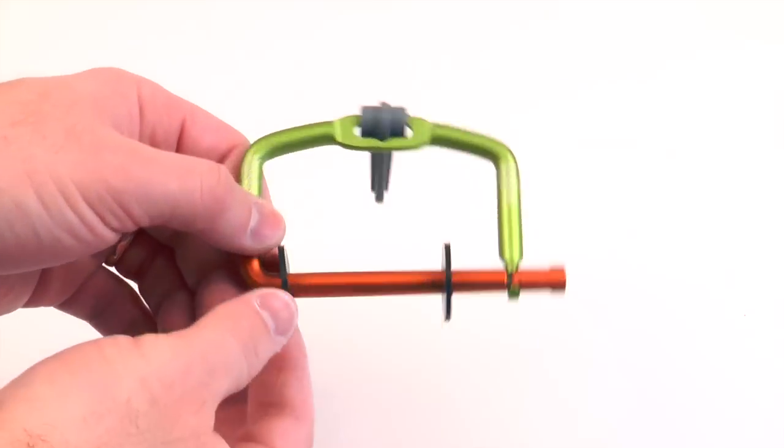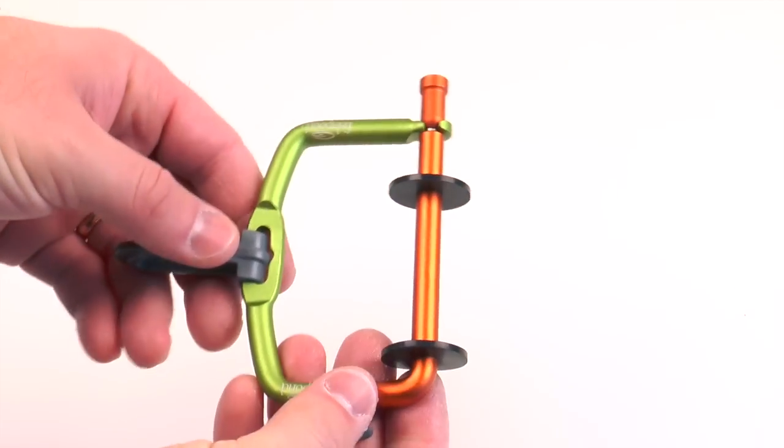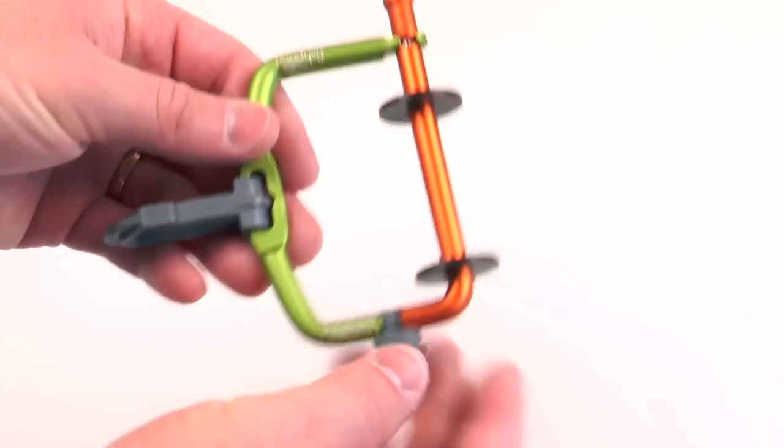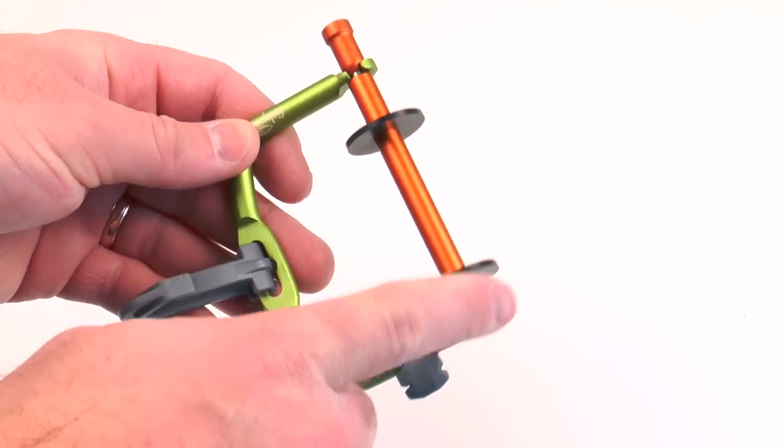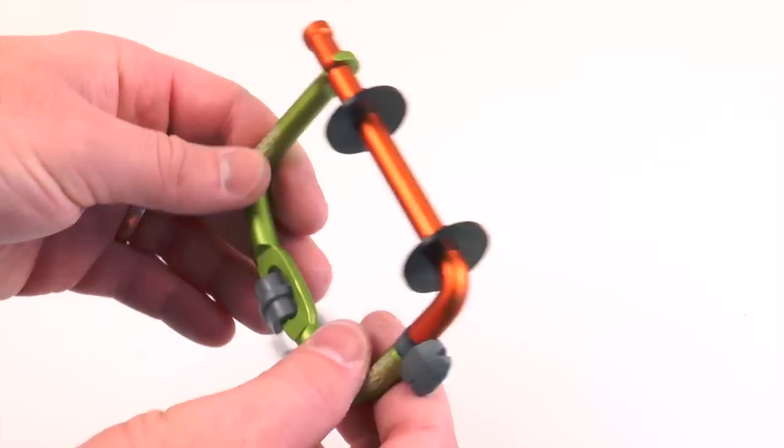The Fishpond Headgate is the latest tippet tool from Fishpond. It has a few really neat features, one of which is it's made of all aluminum, so it's nice and lightweight and very durable.